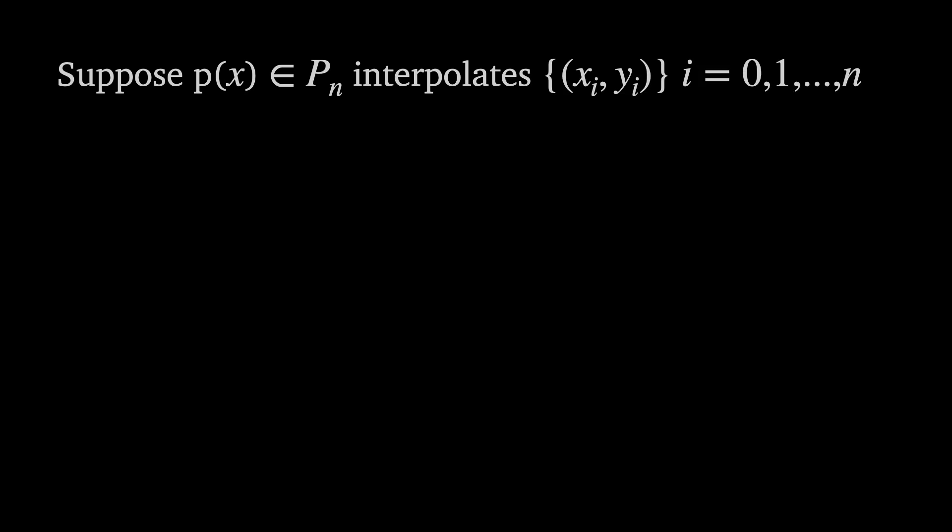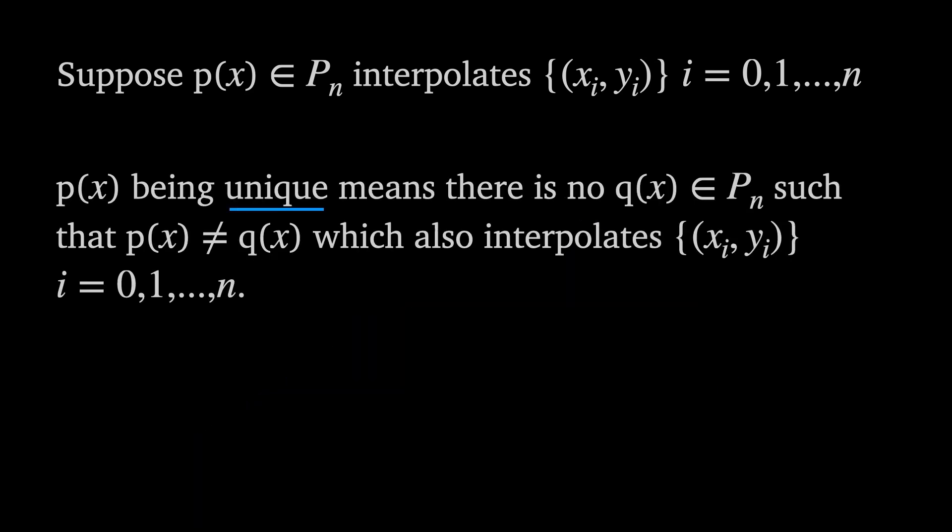Let's first deal with the uniqueness of polynomial interpolants. Suppose p of x in p sub n interpolates a set of n plus 1 nodes. p of x being unique means there's no q of x in p sub n such that q of x is different from p of x but it also interpolates the same set of nodes, and we can prove that no such q of x exists by contradiction.